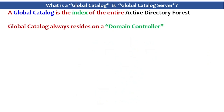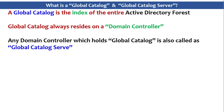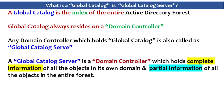Global Catalog always resides on a domain controller. Any domain controller which holds this Global Catalog is also called a Global Catalog server. A Global Catalog is a domain controller which holds complete information of all the objects in its own domain and it holds partial information of all the objects in the entire forest.